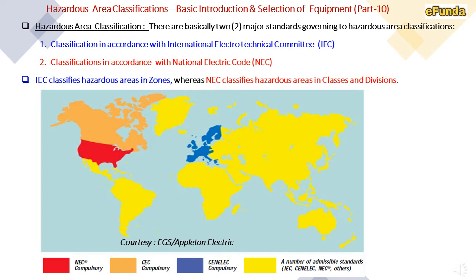There are basically two major standards governing hazardous area classification. One is classification in accordance with the International Electrotechnical Committee, that is IEC; and classification in accordance with the National Electric Code, that is NEC. IEC classifies hazardous areas in zones, whereas NEC classifies hazardous areas in classes and divisions. One can see in the picture where applicable standards are used — NEC shown in red, with other colors indicating respective zones.